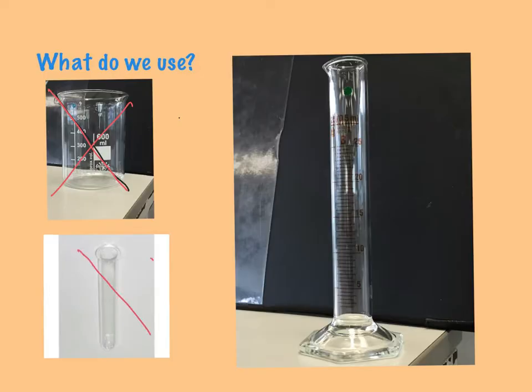So again, no, we don't use those at all. This is what we need to remember: this one has the marks down the side. This one will be the one that gives us the best possible answer, so this is the one we should use—it's a measuring cylinder, as I said before.